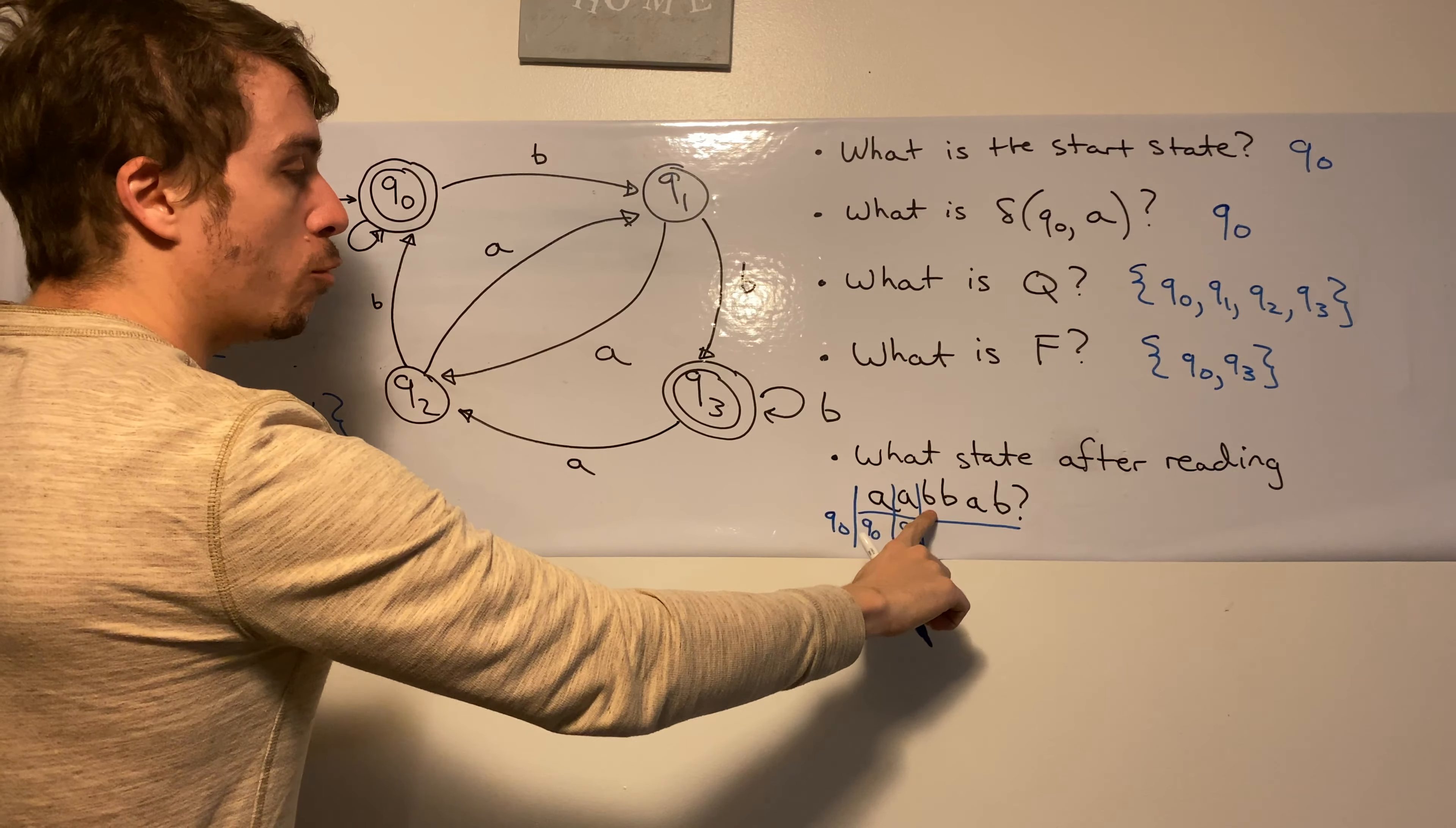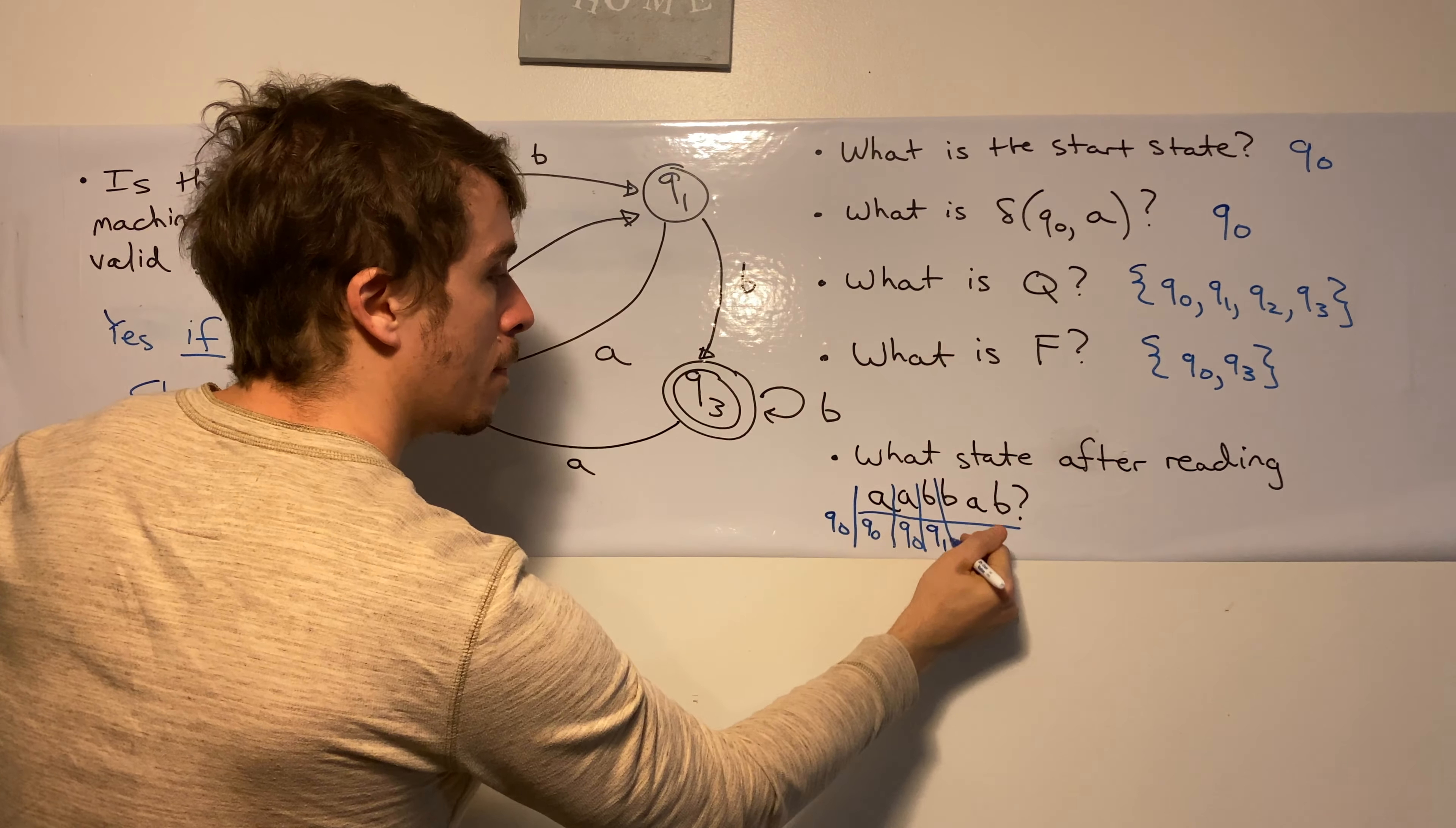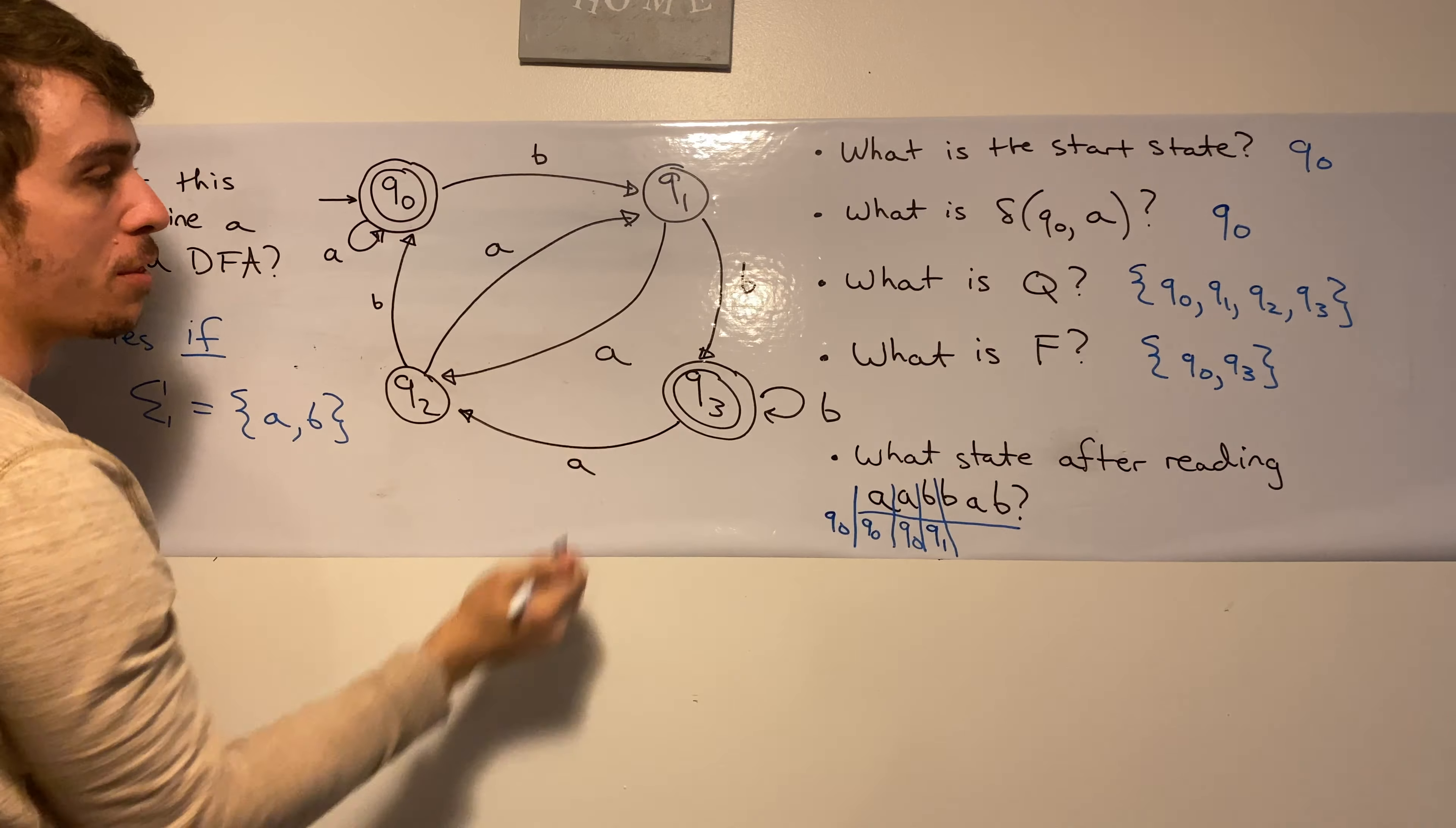So let's see. Q0 reading a B, well, that takes us over to Q1. So let's record that. Q1 reading a B now takes us down to Q3.